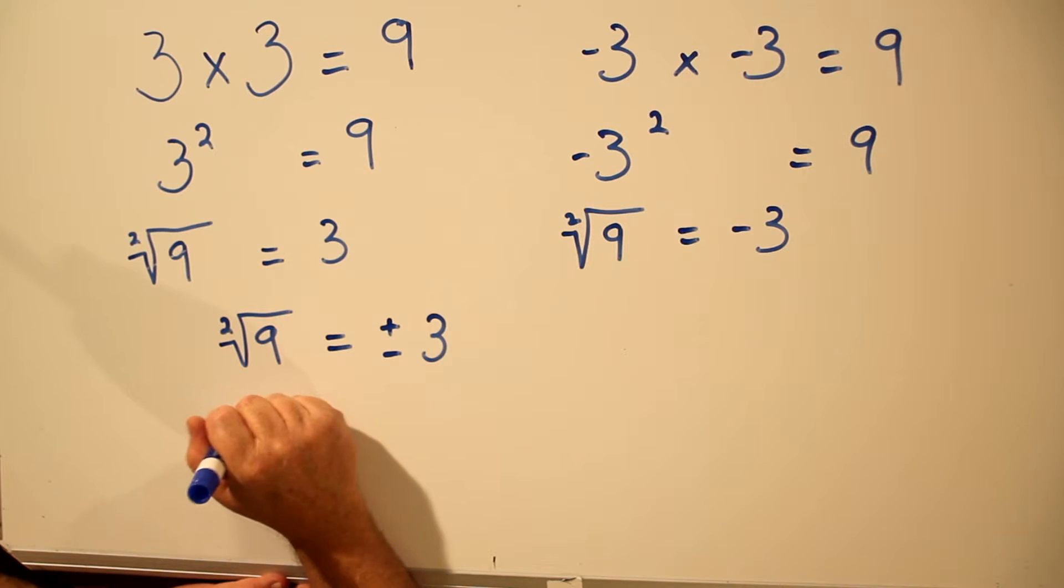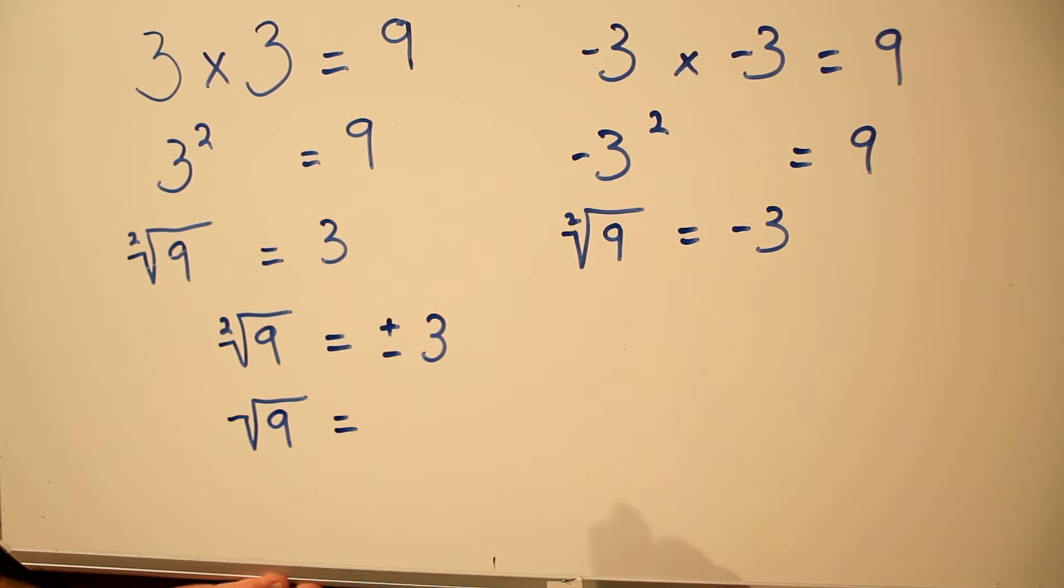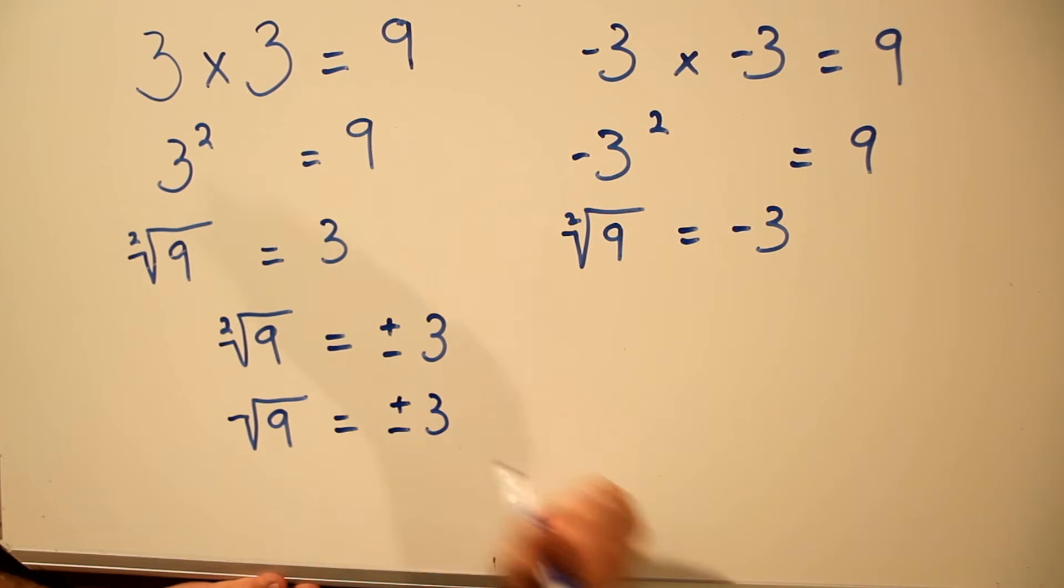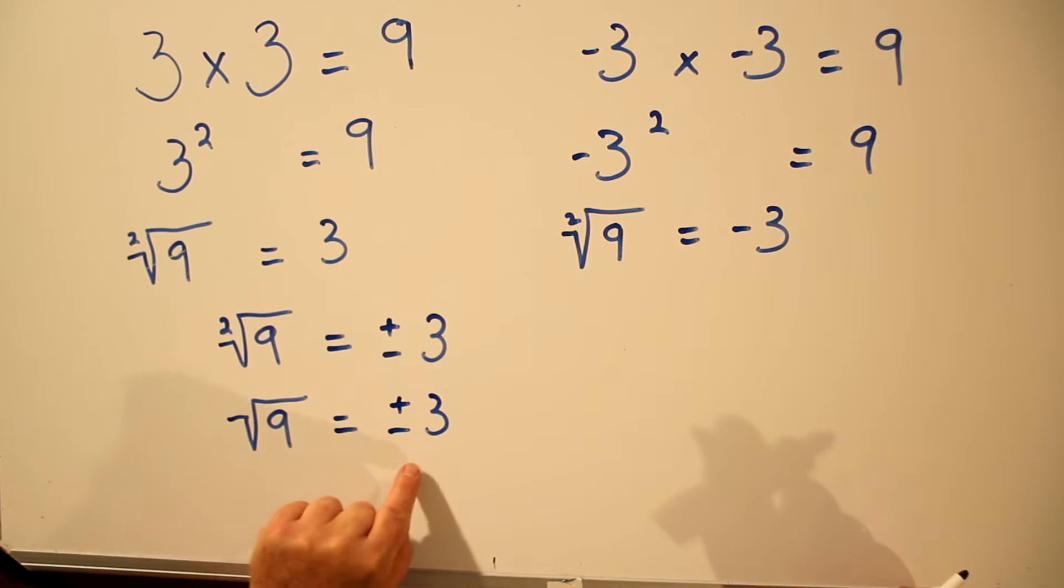Now we can also, with square roots, drop the 2. If you see a radical sign with no root number, it's implied to be a 2. Any other root number will have a number there for the root. Square root of 9 is plus or minus 3, and that's two answers.